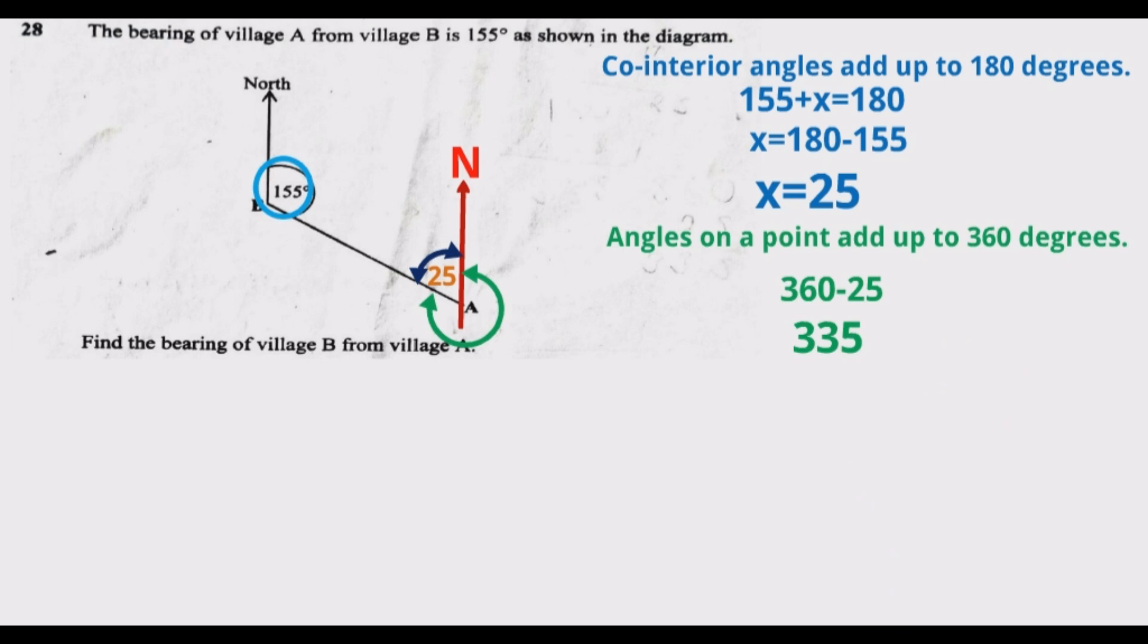And that is the bearing of village B from village A, which is 335 degrees.